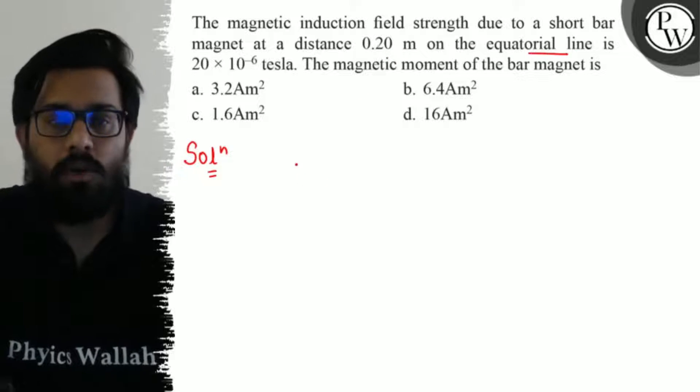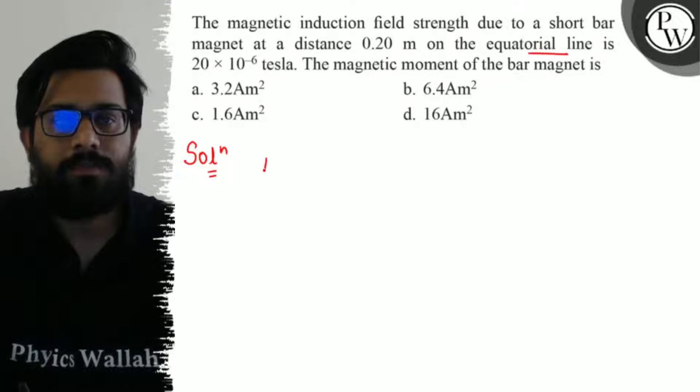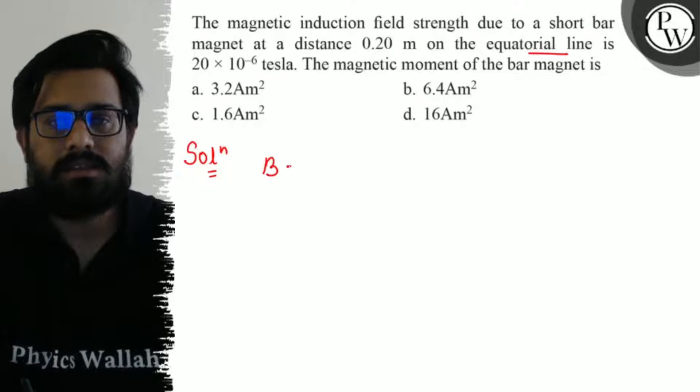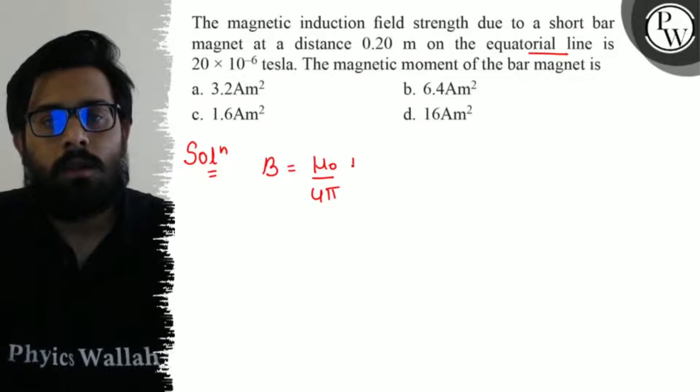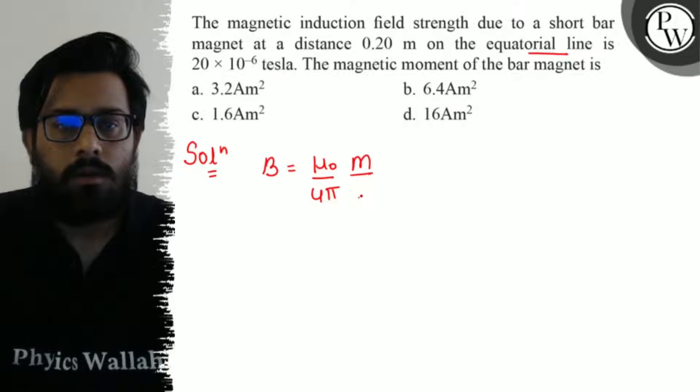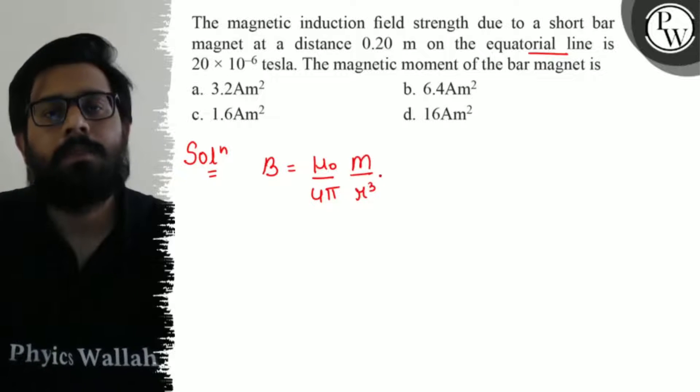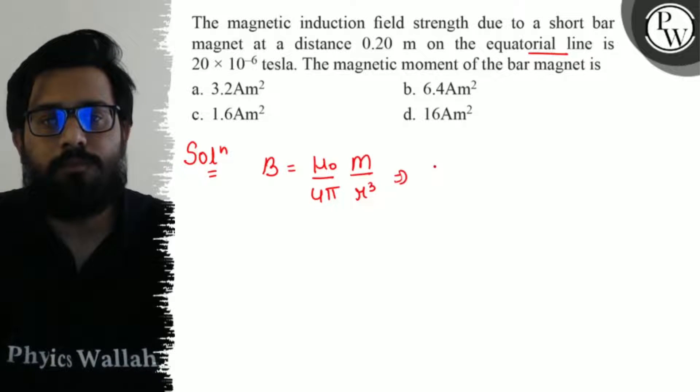So you have the formula for the magnetic moment. We have the formula B equals μ₀ upon 4π into m upon r cubed. So from here, the value of B is...